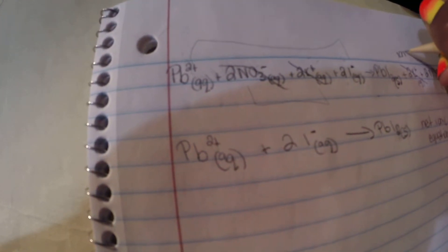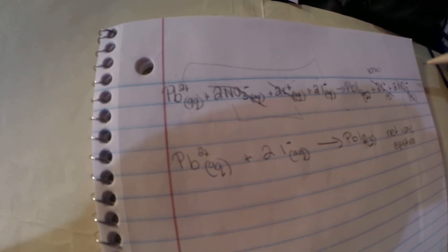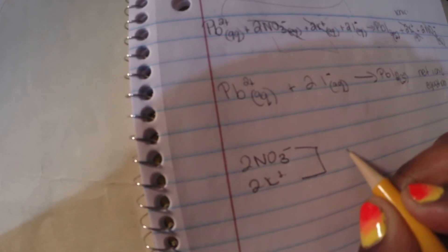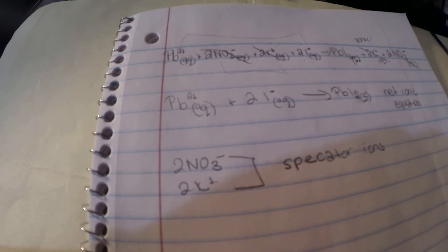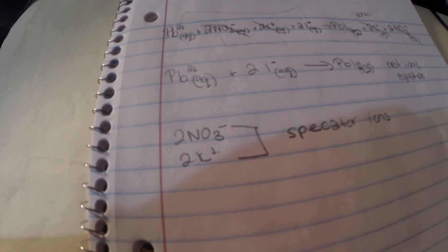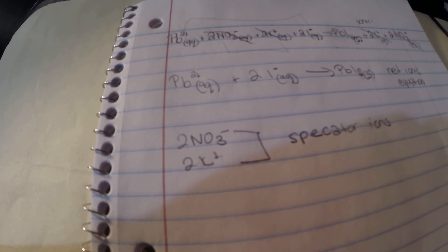So the full equation with all ions written out is called your ionic equation. The ions that didn't play a role — in this case 2NO₃⁻ and 2K⁺ — are called your spectator ions. Hopefully this helps clarify what you need to do. If you have any questions, just let me know.